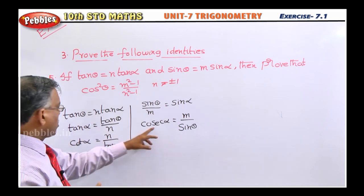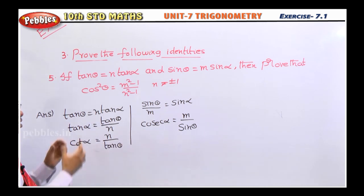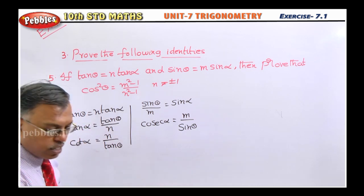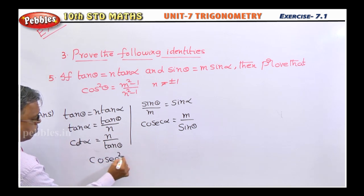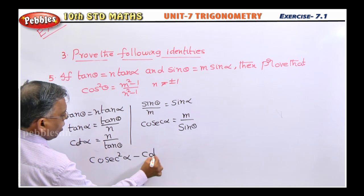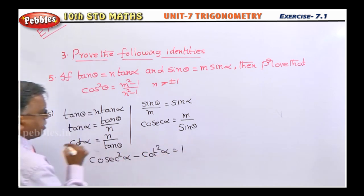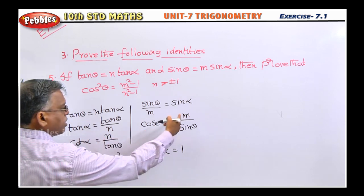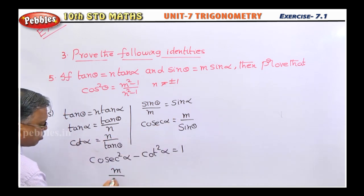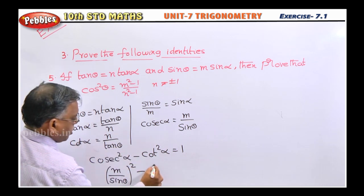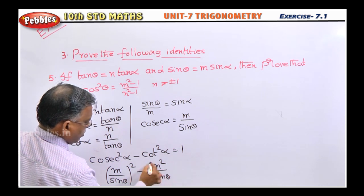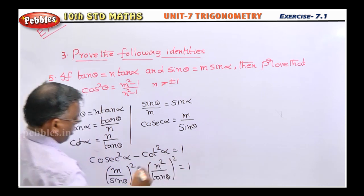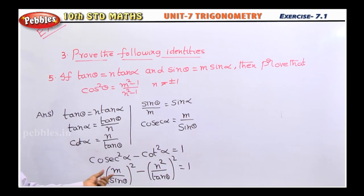The identity we will use is: cosecant²α minus cot²α equals 1. Now substitute cosecant α as m/sin θ and cot α as n/tan θ. So we get (m/sin θ)² minus (n/tan θ)² equals 1.